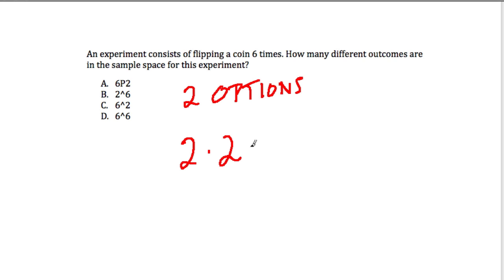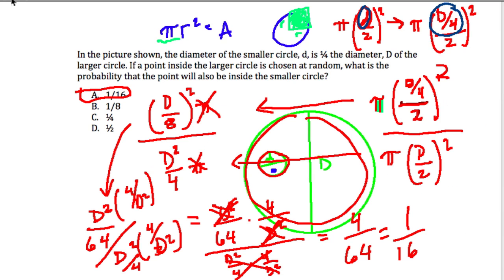Well, if every time you flip a coin, there's two options. So it's 2 times 2 for two flips, times 2 for 3, times 2 for 4, times 2 for 5 flips, times 2 for 6 flips, this is equal to 2 to the 6th power, which is choice B. That's a lot of outcomes.